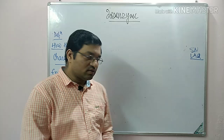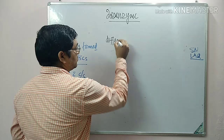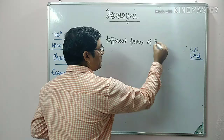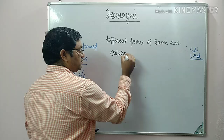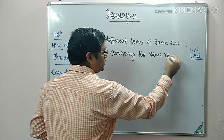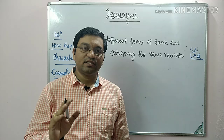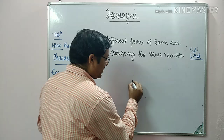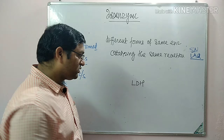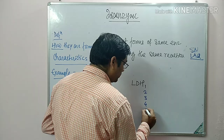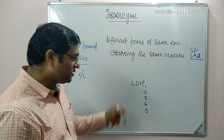Coming to the definition: isoenzymes are different forms of the same enzyme catalyzing the same reaction. Take one example — lactate dehydrogenase. There are various isoenzymes of lactate dehydrogenase: LDH1, LDH2, LDH3, LDH4, and LDH5. Each one catalyzes the conversion of lactate into pyruvate.